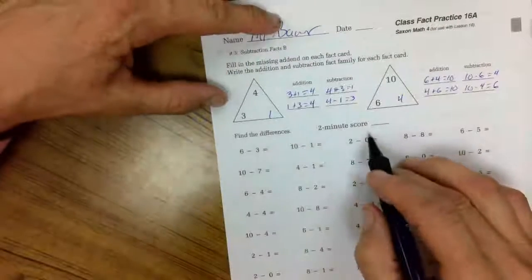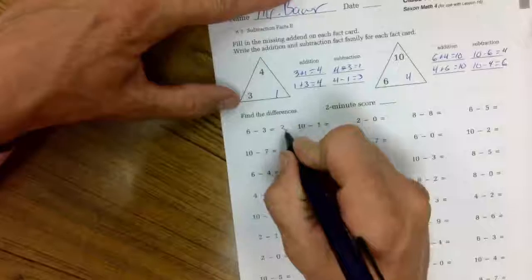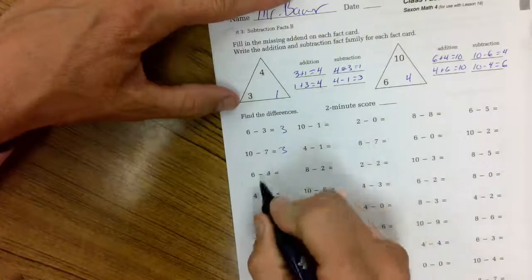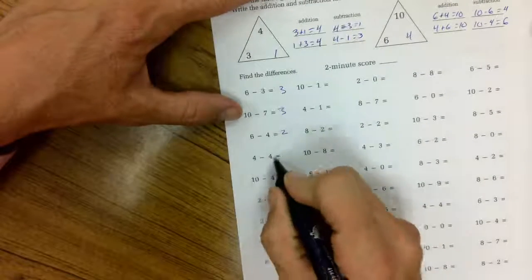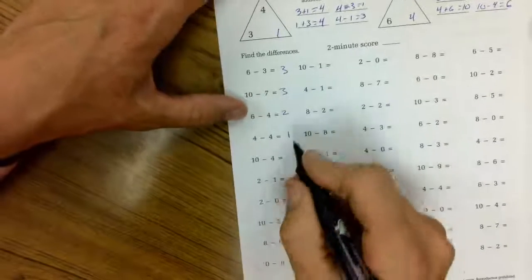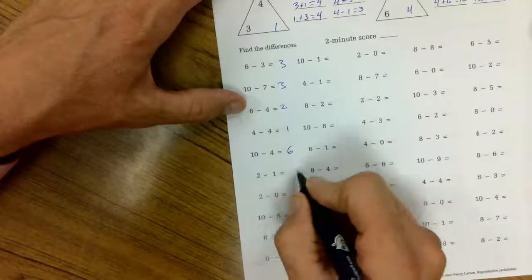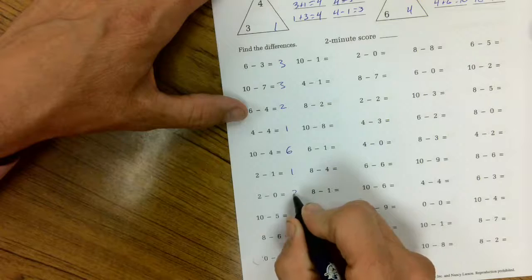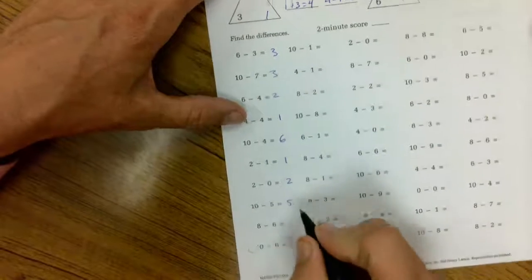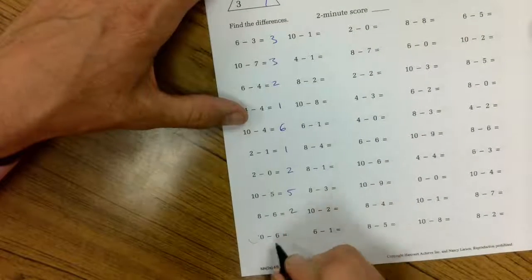2 minutes is our goal today. 6 minus 3 is 3. 10 minus 7 is 3. 6 minus 4 is 2. 4 minus 4 is 1. 10 minus 4 is 6. 2 minus 1 is 1. 2 minus 0 is 2. 10 minus 5 is 5. 8 minus 6 is 2.